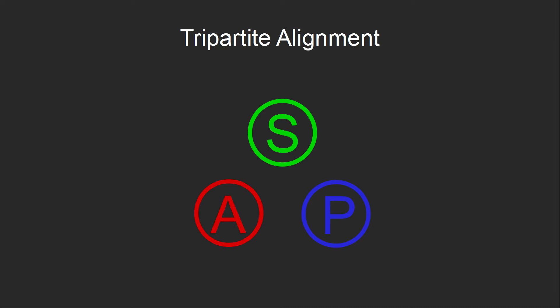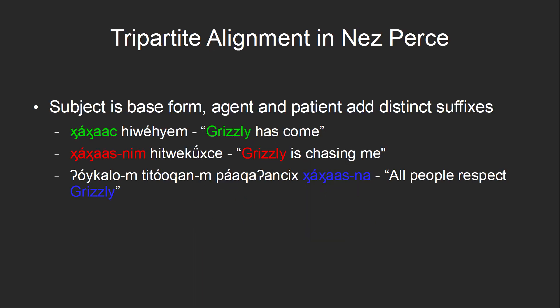Yet another possibility is to say that the subject is completely distinct from both the agent and the patient, and to have three distinct forms. This is called tripartite alignment. This sort of alignment is actually quite rare, because it adds unnecessary complexity for little real benefit — the subject is always clear in an intransitive sentence, so there's no need for it to have its own special marking. An example of tripartite alignment can be found in the Nez Perce language, spoken in the northwestern United States. The subject is the base form, and the agent and patient add distinct suffixes to clarify their role in the sentence.